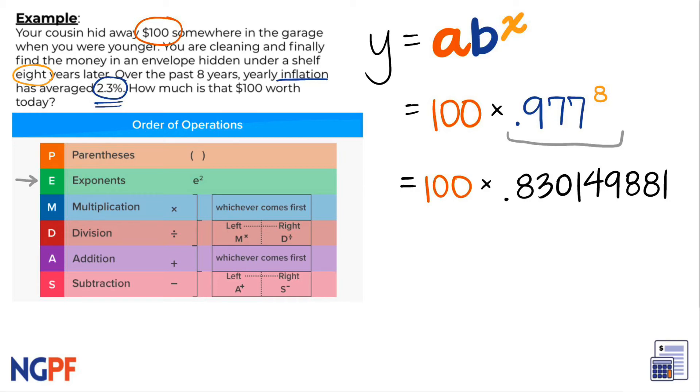In order to get the most accurate value, I will round at the very end of my calculations to the nearest whole dollar. The last operation I have left is multiplication, so we can multiply 100 and .830149881, which gives us 83.0149881.